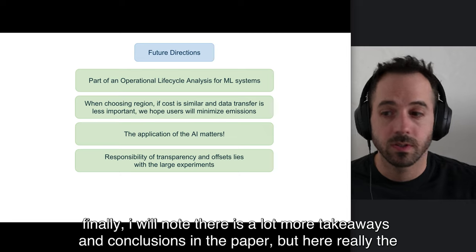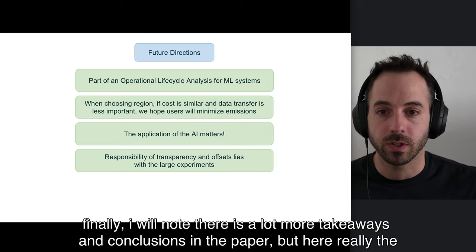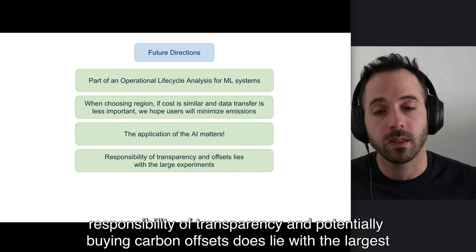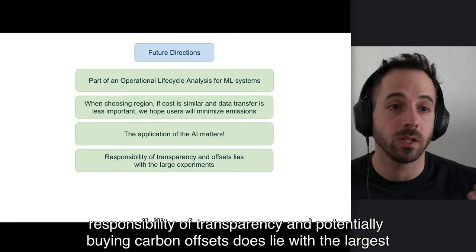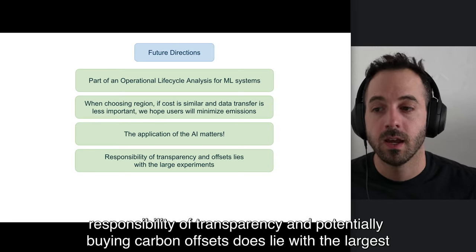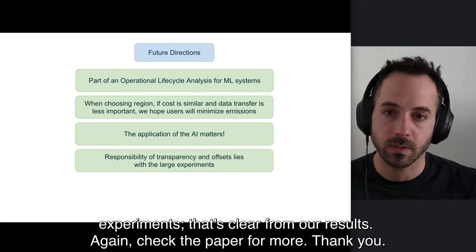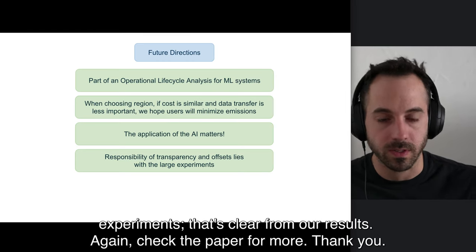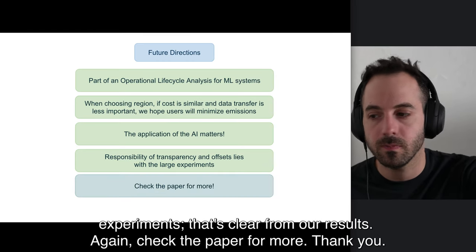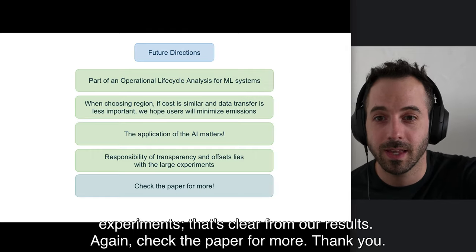Finally, I will note there's a lot more takeaways and conclusions in the paper, but here really the responsibility of transparency and potentially buying carbon offsets does lie with the largest experiments. That's clear from our results. Again, check the paper for more. Thank you.